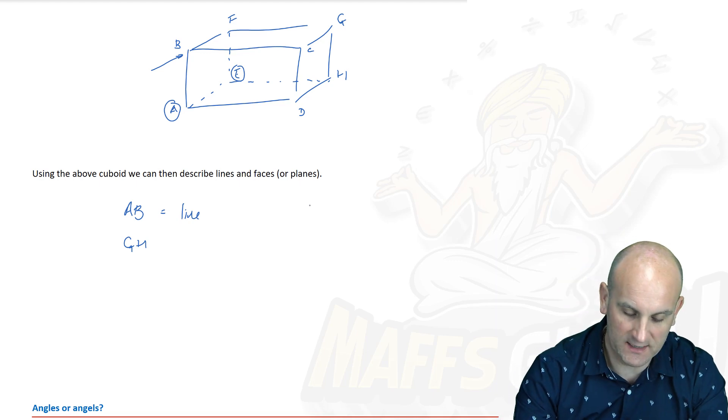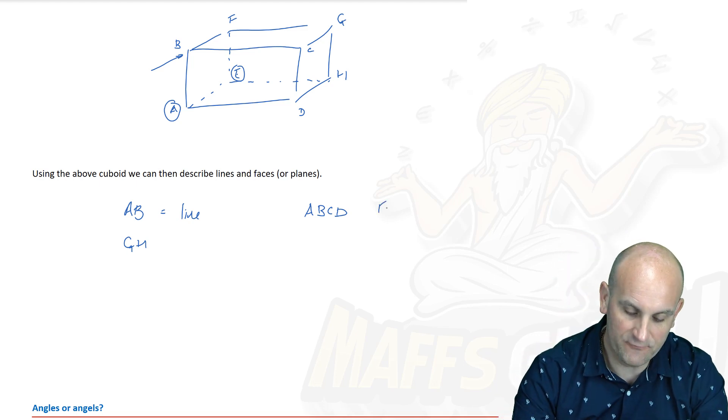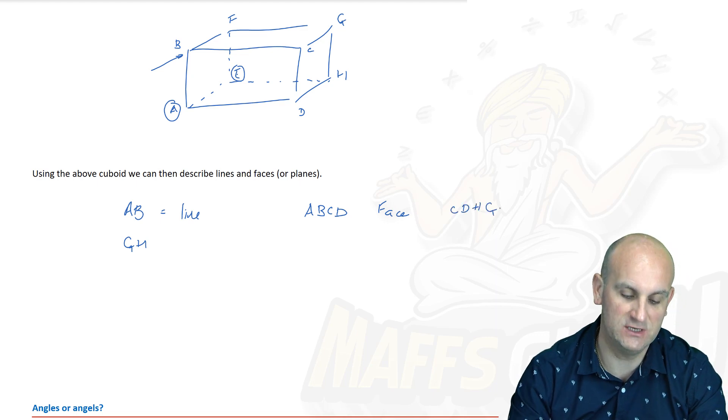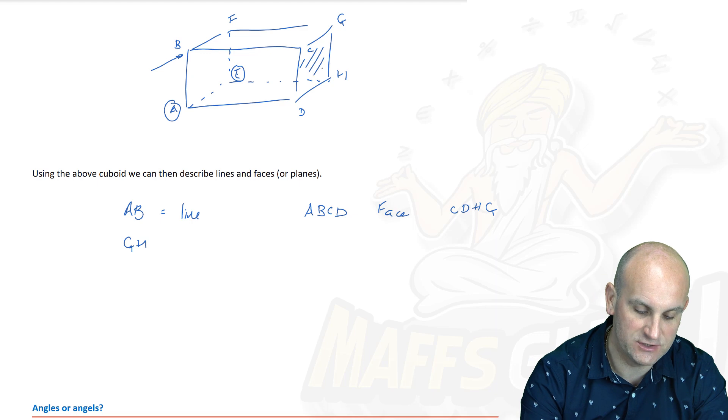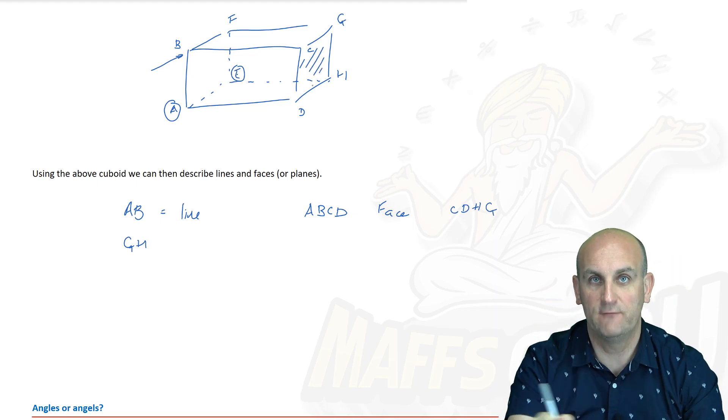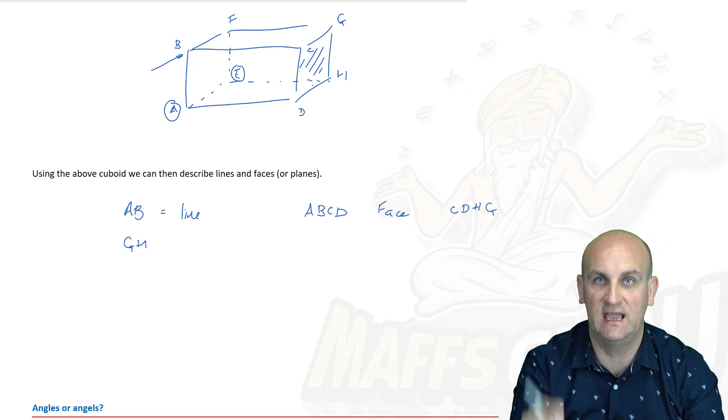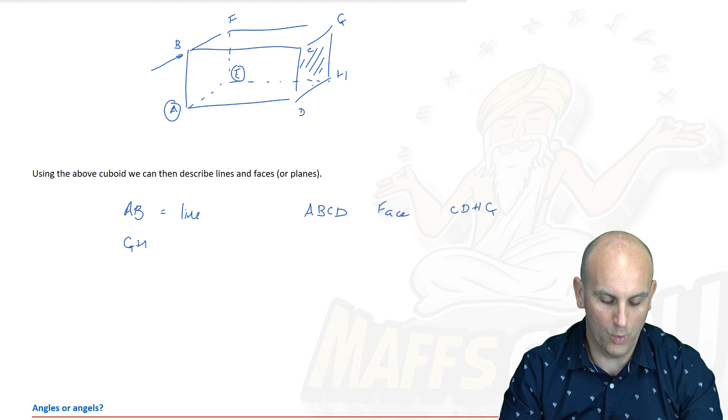So if I wanted to talk about a face, I could use A, B, C, D. That's the front of my face. Alright, so that's a face. And what else could we have as a face? I could have C, D, H, and G. Now there we go. So C, D, H, G is that one there. Notice once again I've chosen a corner and then I've gone around it in a particular direction. I didn't go C, D, G, H because that wouldn't make any sense whatsoever.